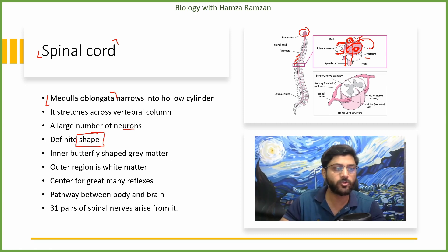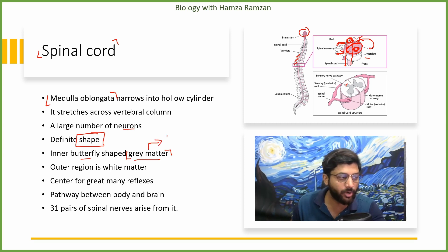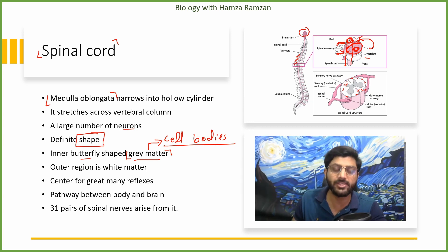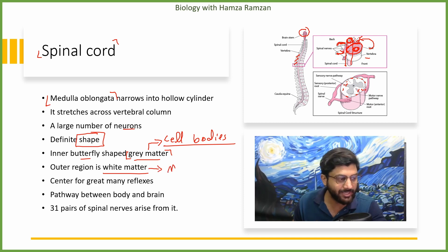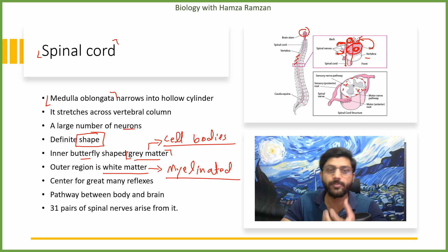When we talk about the spinal cord, the cross section has a butterfly-shaped grey matter. This is the grey matter — these are all cell bodies in the spinal cord. These are non-myelinated areas. The white matter is the myelinated area. So the cell bodies are available in grey matter, and grey matter is made of cell bodies.